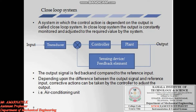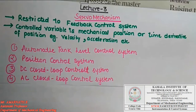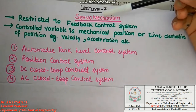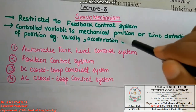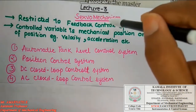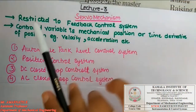We are going to study the mechanism used to correct the error and give the desired output. This corrective action is generally done by using a mechanism called servomechanism. It is an automatic device that controls or corrects the performance of a mechanism by using a feedback element — in simple words, it is restricted to the feedback element.